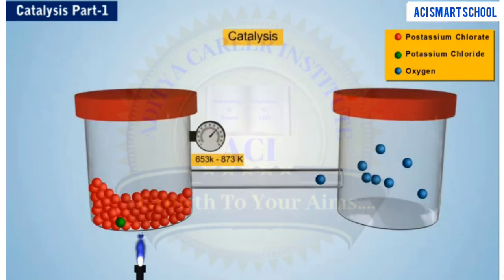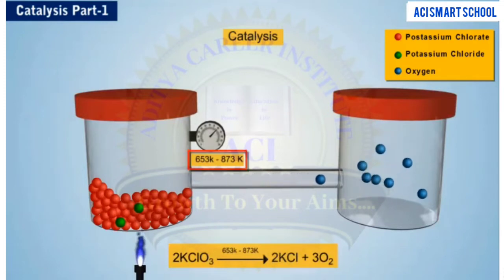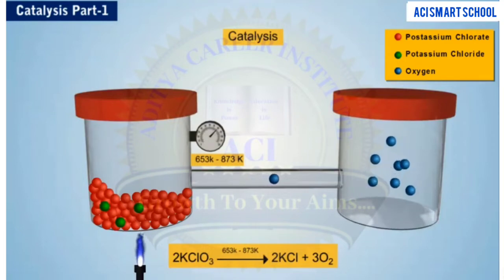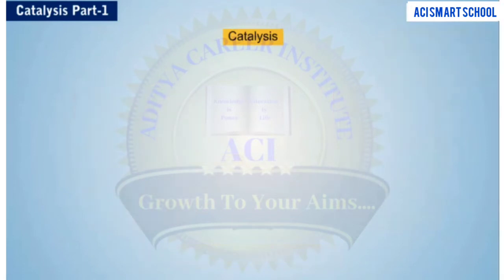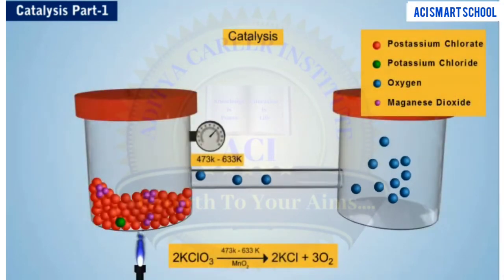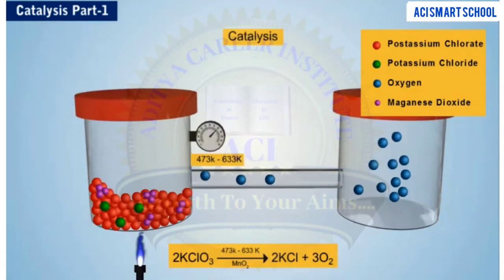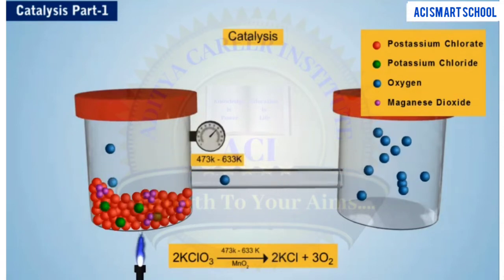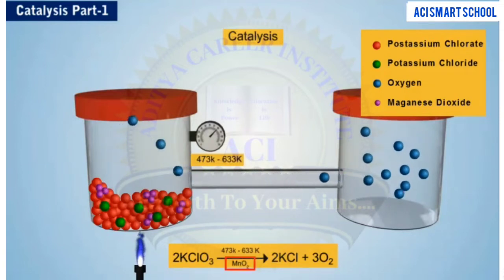Look at this example. When potassium chlorate is heated strongly at 650 to 873 Kelvin, it decomposes slowly, giving potassium chloride and oxygen. The same reaction takes place at an accelerated rate and at a lower temperature from 473 to 633 Kelvin when manganese dioxide is added to the reactants.